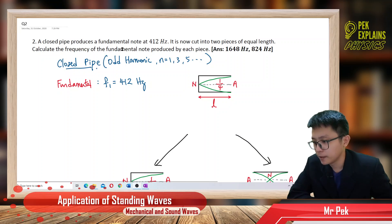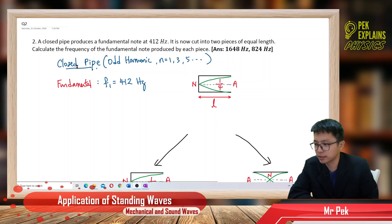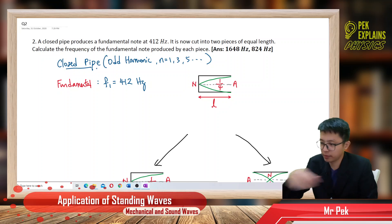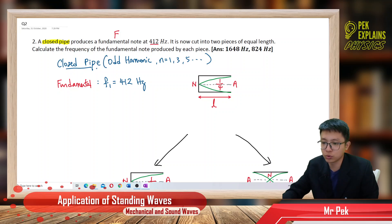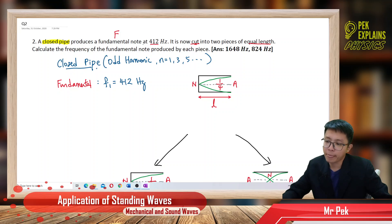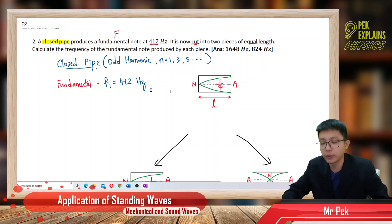First of all, it is started with a closed pipe that produces a fundamental mode. The pipe is cut into two pieces of equal length, and we need to calculate the frequency of the fundamental mode. Let us start with drawing the diagram — I always draw the diagram.